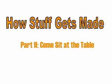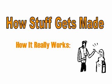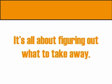Welcome to manufacturing math, lesson 1 part 2: how stuff gets made. Manufacturing works a lot like sculpture — you start with a block of material and cut away everything that isn't the thing you want to make. So the big question for manufacturing is: how much do you take away? And the big mystery is: how do you know how much to take away?